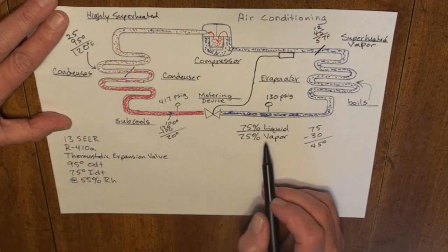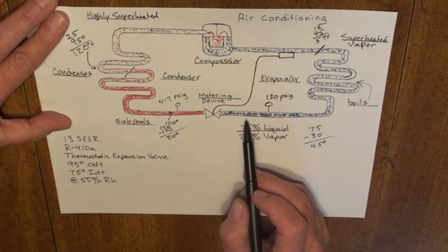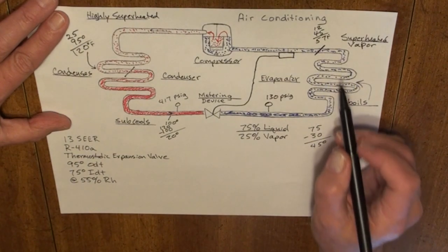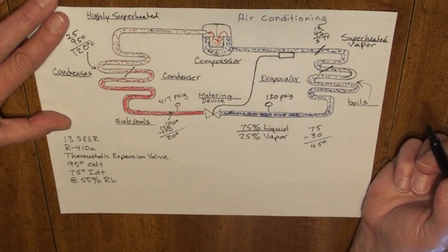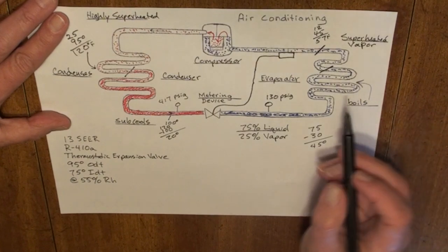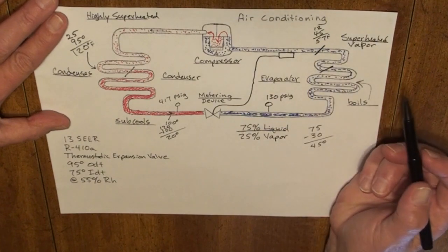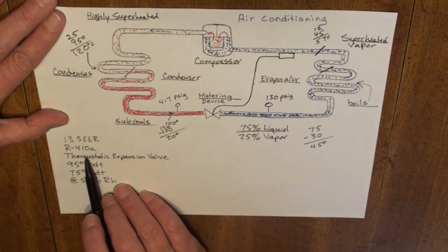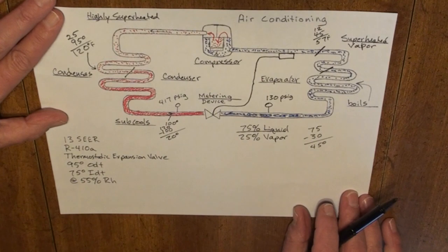It enters the metering device, immediately begins to boil to a vapor. At 130 PSIG, boils throughout the evaporator, at about the 90% point through the evaporator, we have a pure vapor. It leaves the evaporator as a 57 degree superheated vapor. So, this is the higher sear 410A example of our basic refrigeration cycle.